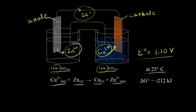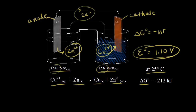In one of the videos in electrochemistry, we took our standard cell potential and calculated delta G zero from it. We used the equation: delta G zero is equal to negative NFE zero. We plugged in our standard cell potential and got delta G zero — the change in free energy under standard conditions — equal to negative 212 kilojoules.